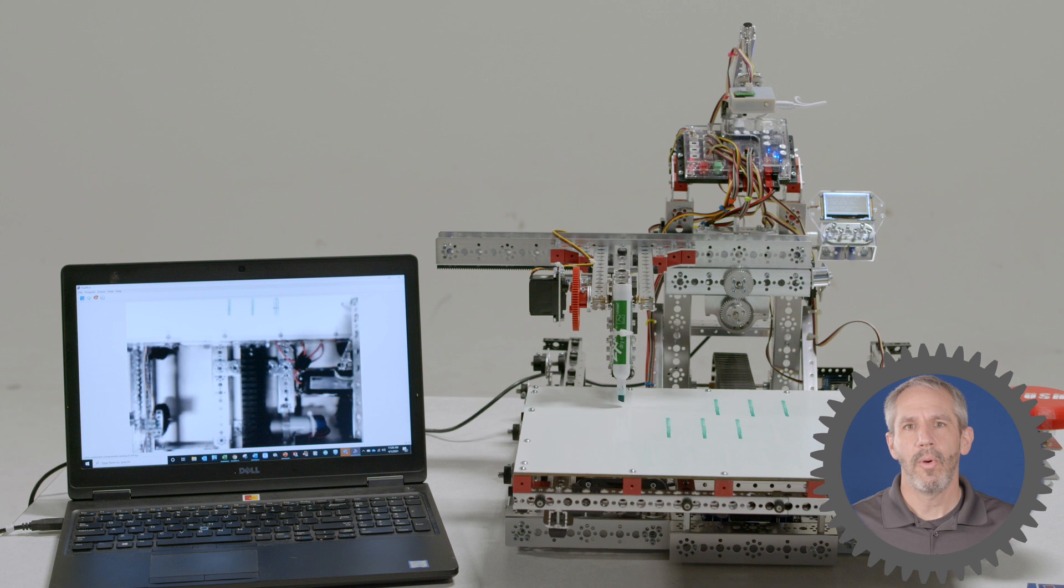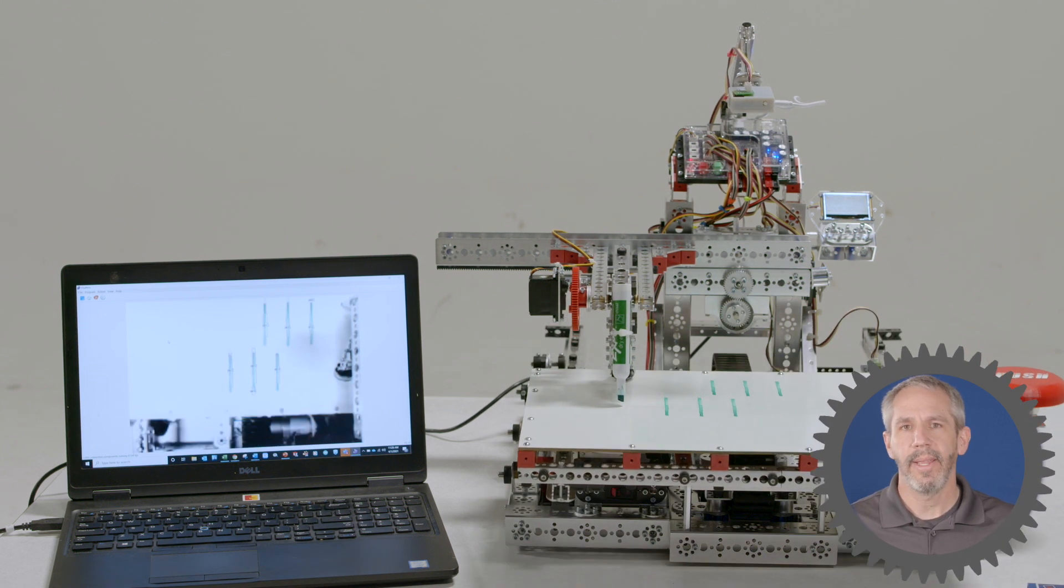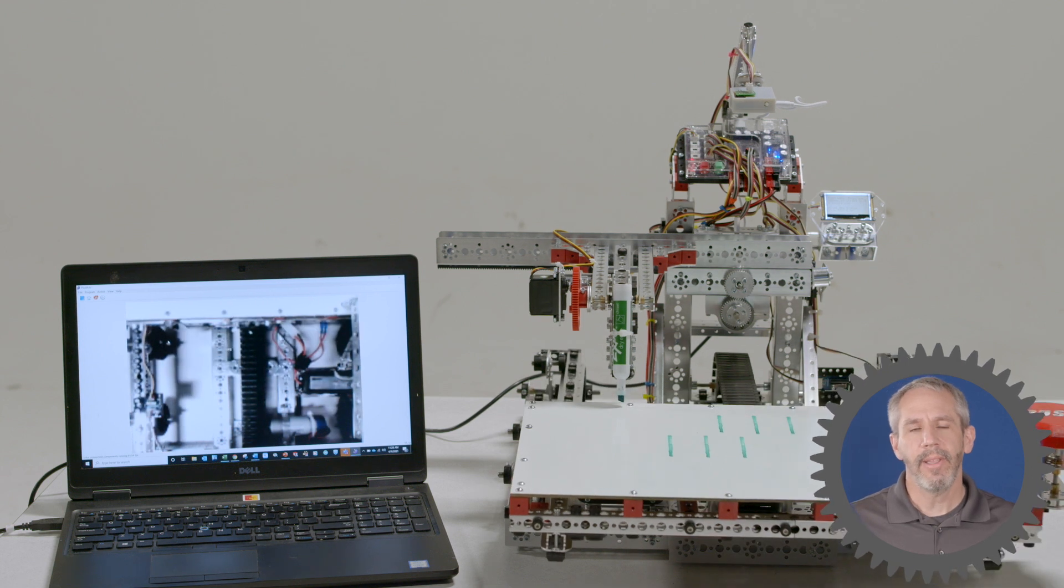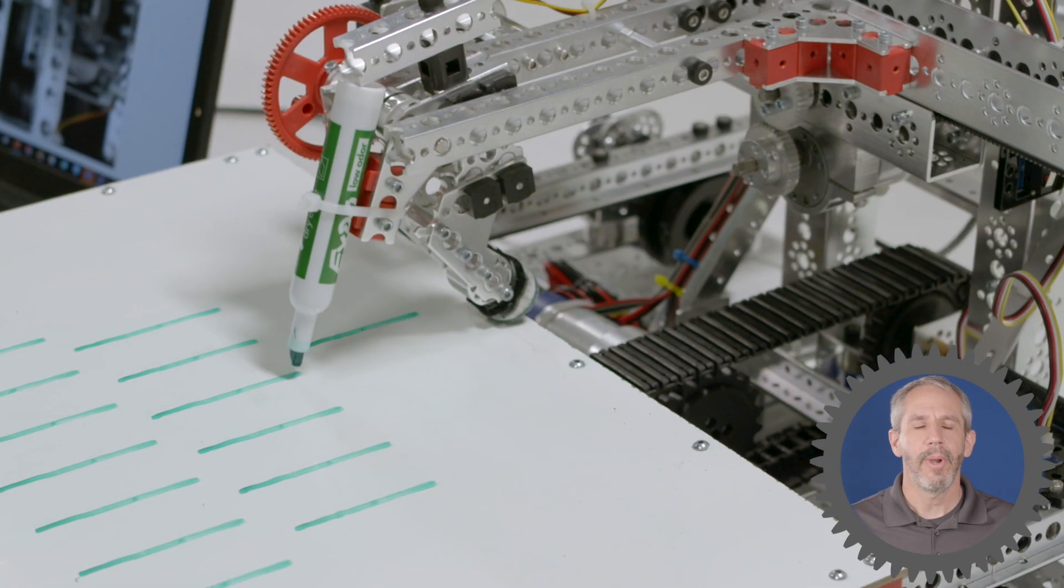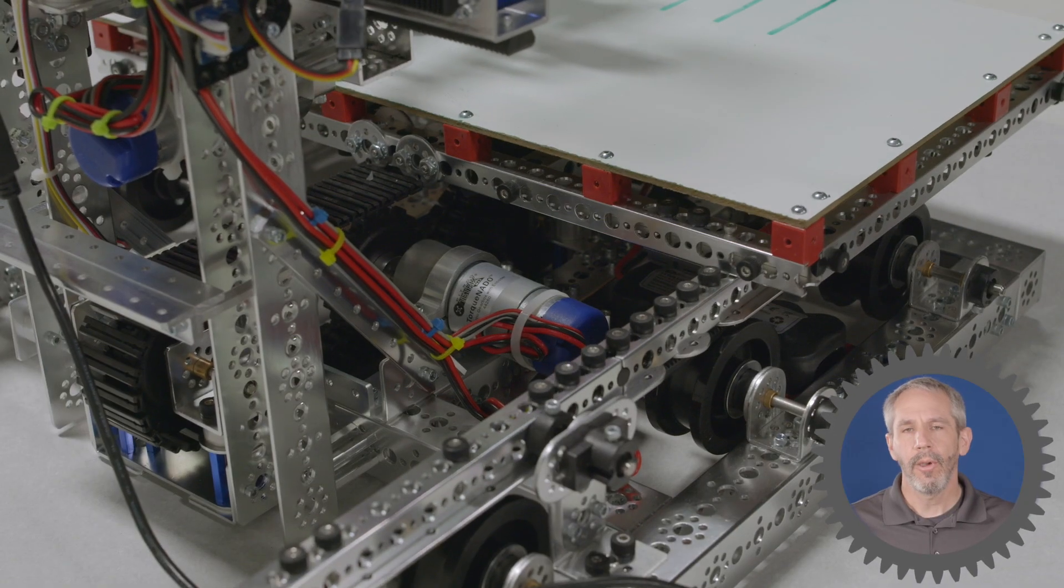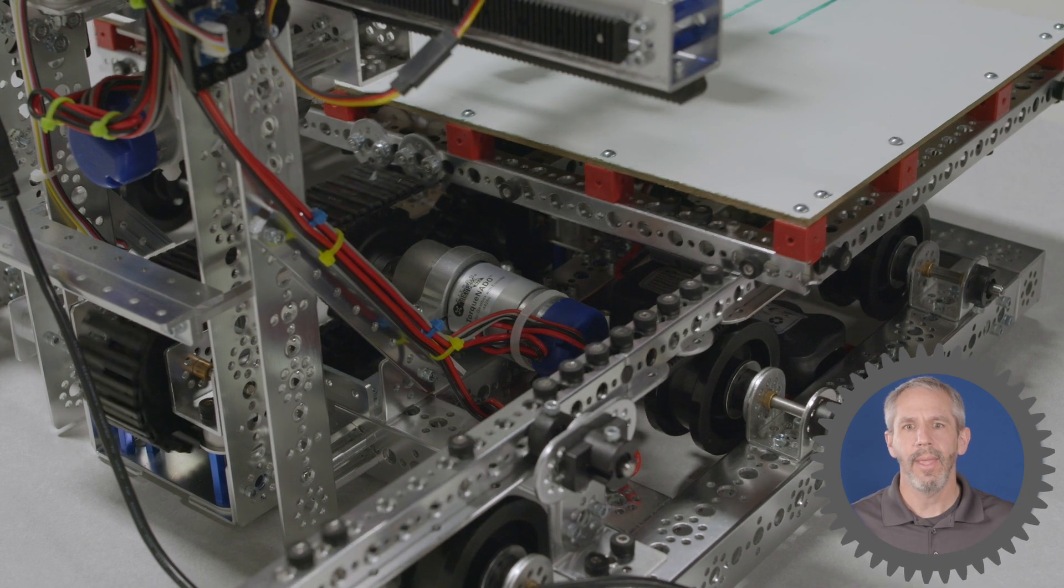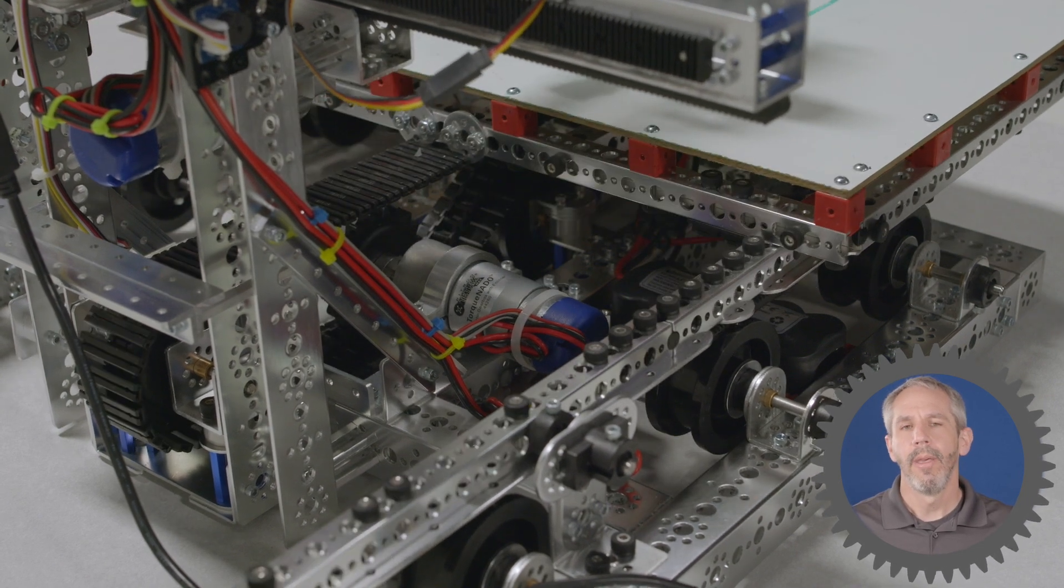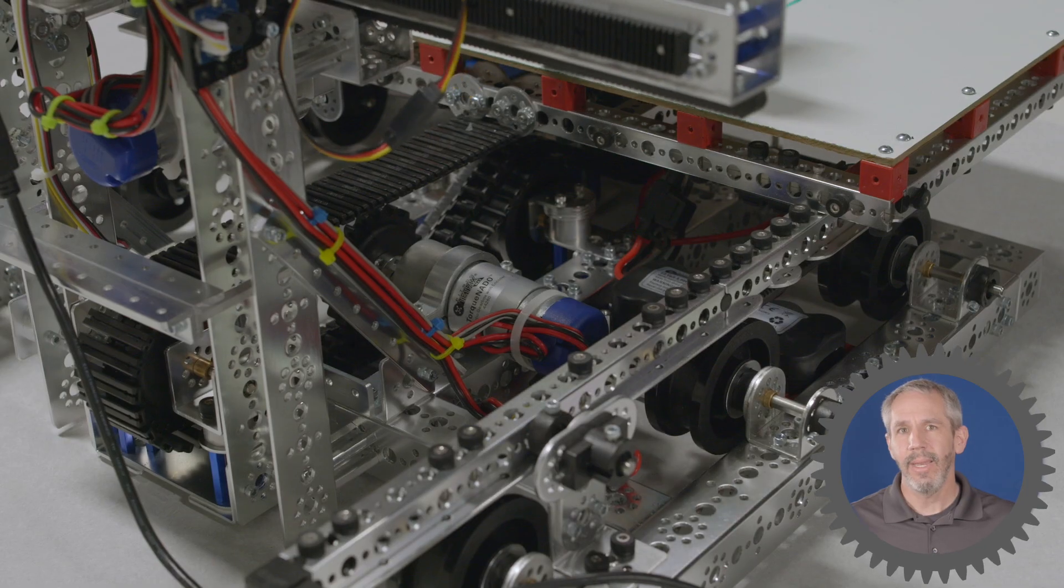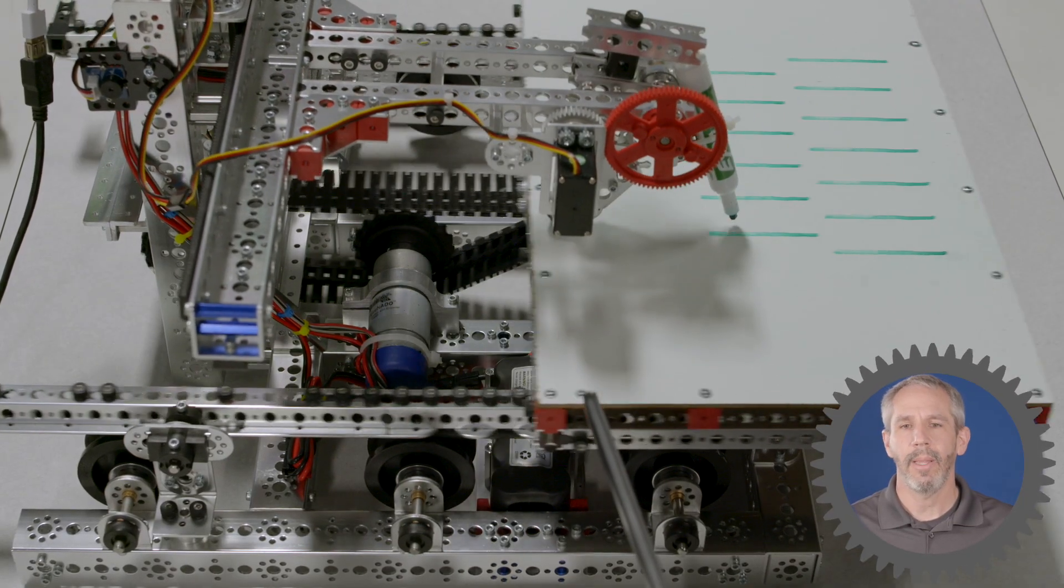The thing I want to point out is how the robot uses encoders to create an x-y coordinate grid. The encoder counts on one torquenado drive the marker back and forth in the x direction. The encoder counts on the other torquenado drive the table back and forth in the y direction. The robot can move the marker precisely to any point in this x-y coordinate grid to draw or erase a line.